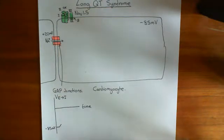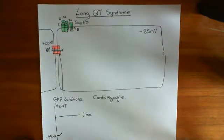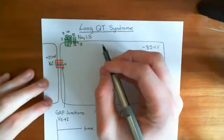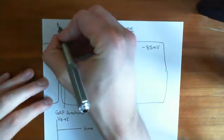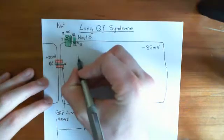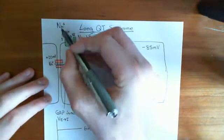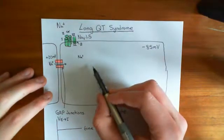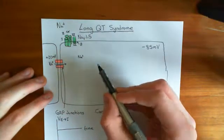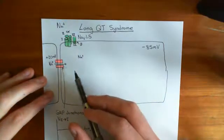That voltage-gated sodium channel is going to open, and that's going to allow sodium to come into the cell. Sodium concentrations are usually much higher in the extracellular fluid than in the intracellular fluid, so the concentration gradient favors the movement of sodium into the cell.